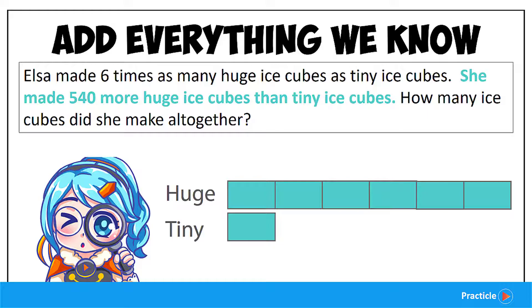Did you manage to find the words 'more than'? 540 more huge ice cubes than tiny ice cubes. Once again, it looks like we are comparing the number of huge ice cubes and the tiny ice cubes.